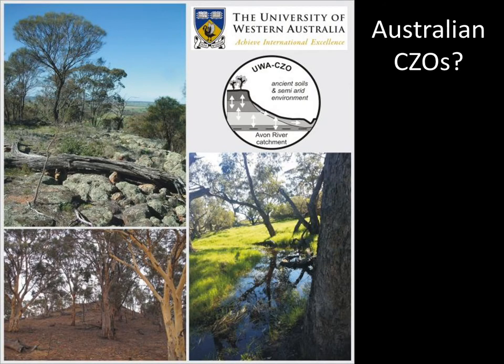We did have a few attempts to establish individual critical zone observatories in Australia, notably in Western Australia and in Queensland, but we hadn't been able to make the idea stick. So about two years ago a group of us got together and said: why don't we leave aside the idea of individual observatories and instead try to pilot a network of observatories across the continent? With the support of five universities, several scientific institutes, and the ARC, we have been able to fund this through ARC's LEAF program.